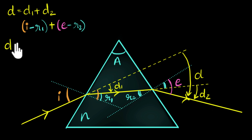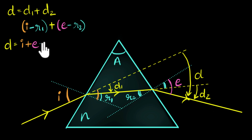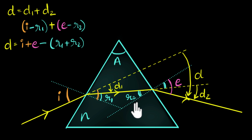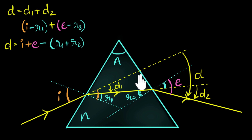So now we can write our angle of deviation as D equals I plus E minus (R1 plus R2). We cannot call this our final equation for deviation because R1 can be calculated by applying Snell's Law once we know I, and R2 can be calculated from R1 by doing some geometry. Similarly, once we know R2, E can be calculated again by applying Snell's Law. So these are numbers that can be calculated — we need to get rid of them.